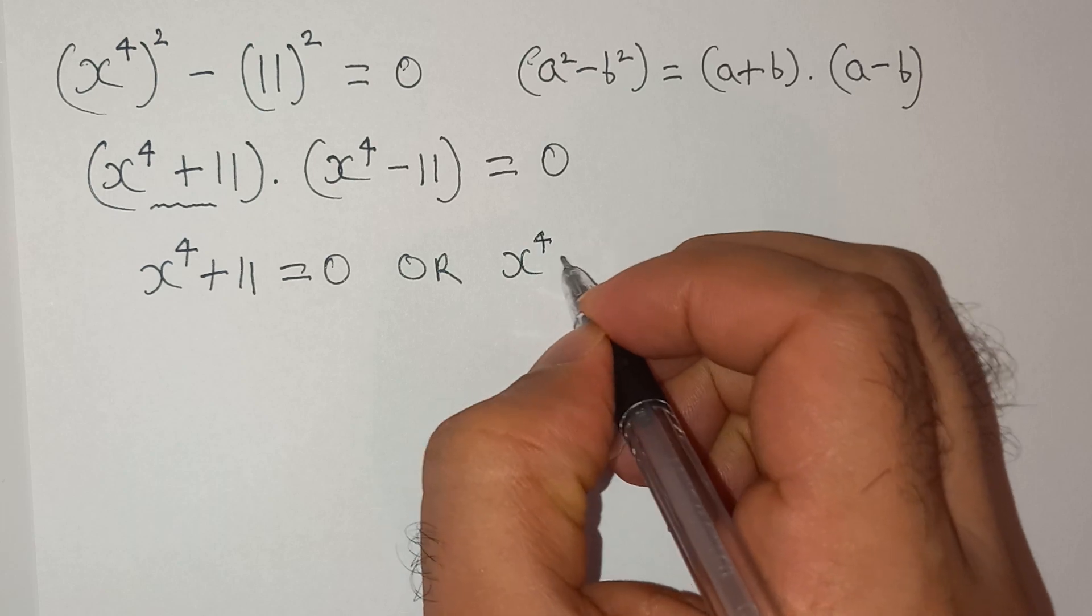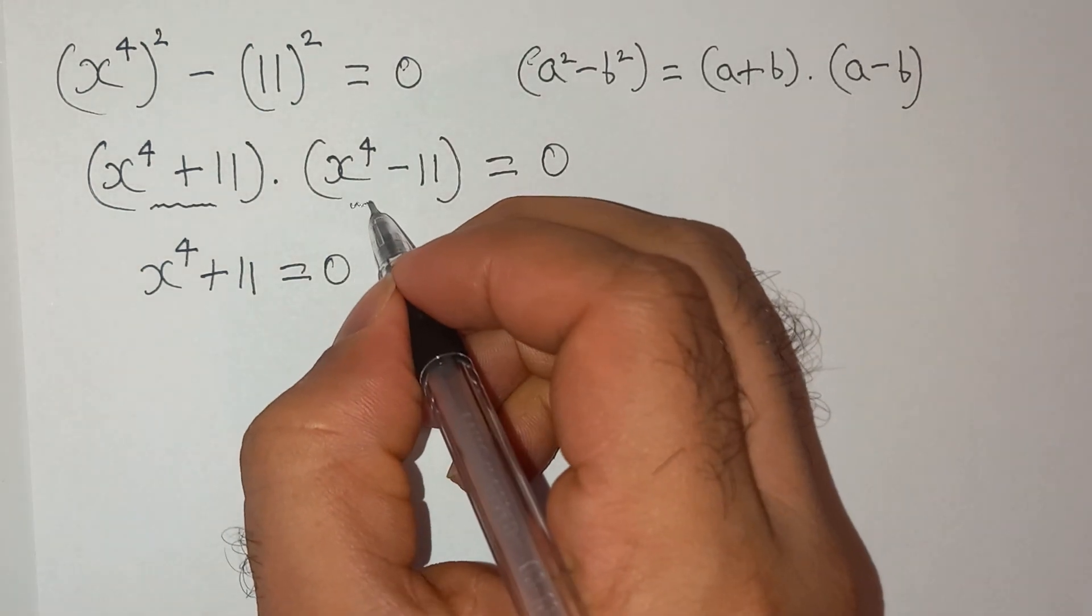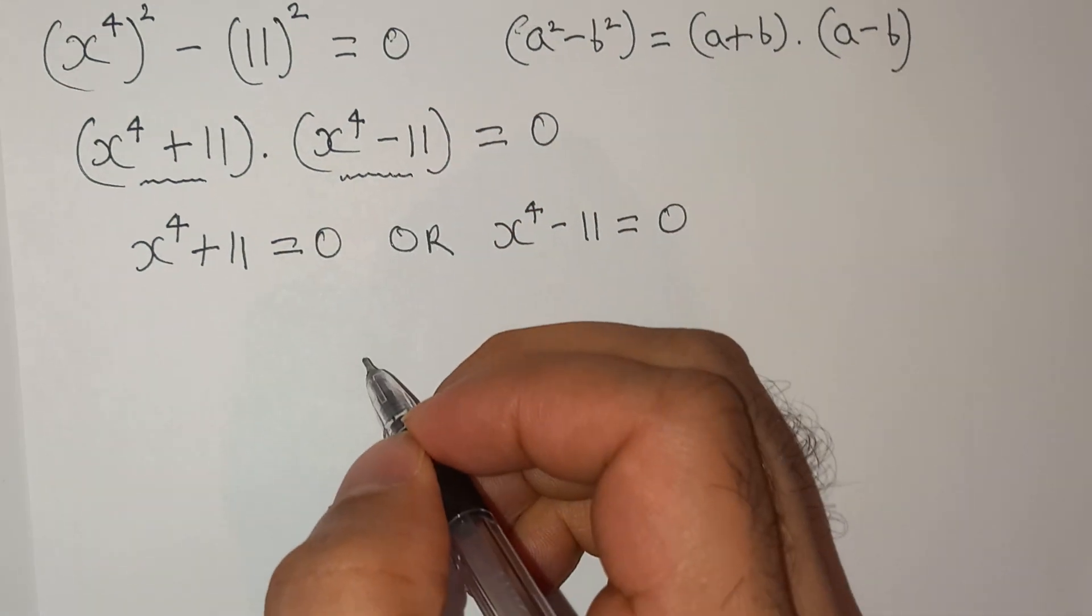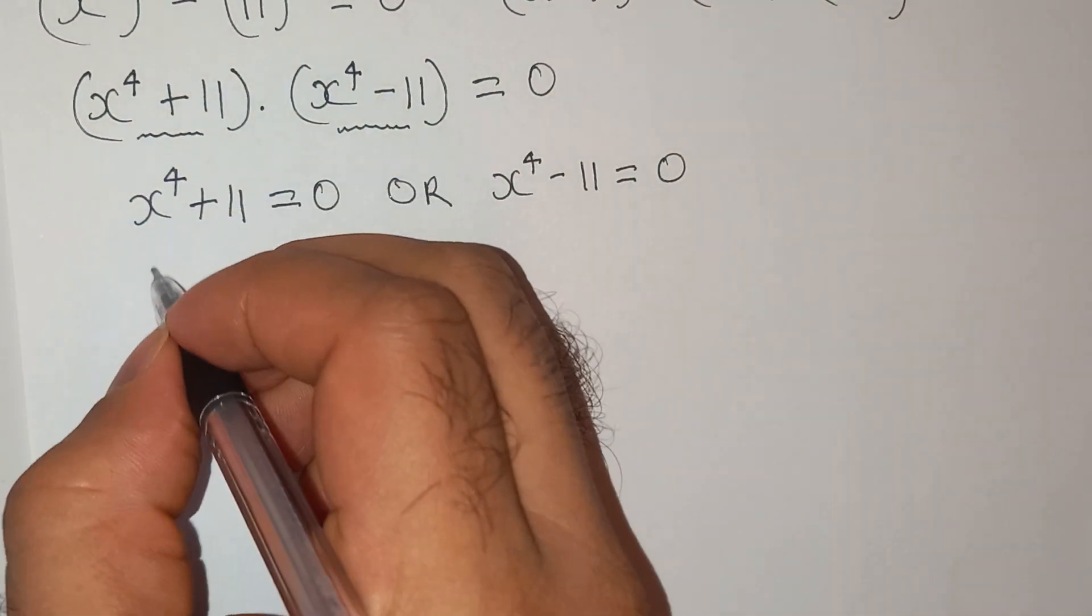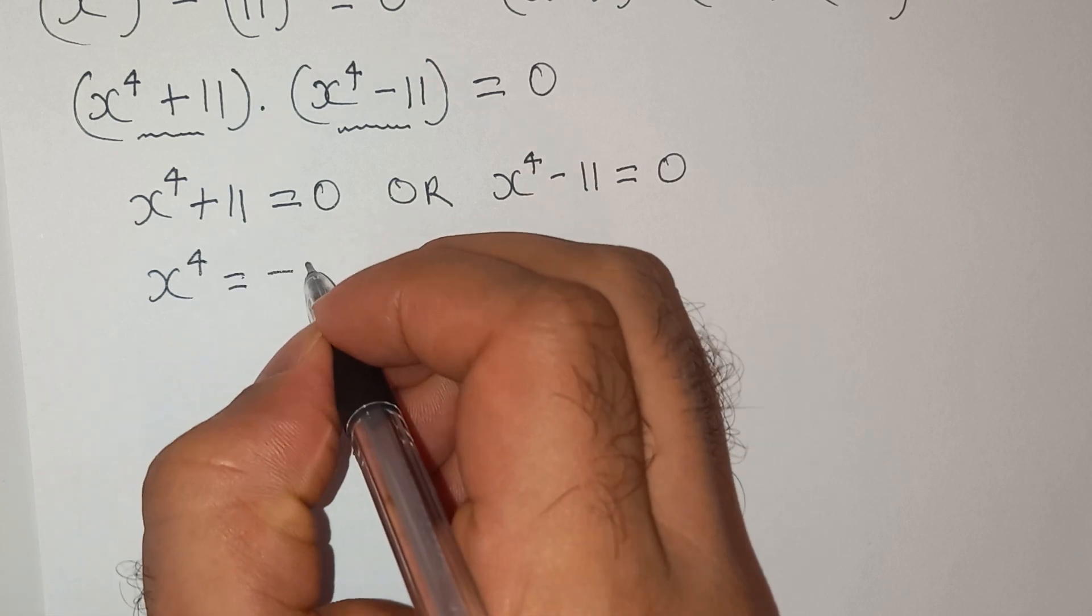x power 4 minus 11 equals to 0, this term. Now from this term we can say x power 4 equals to minus 11.